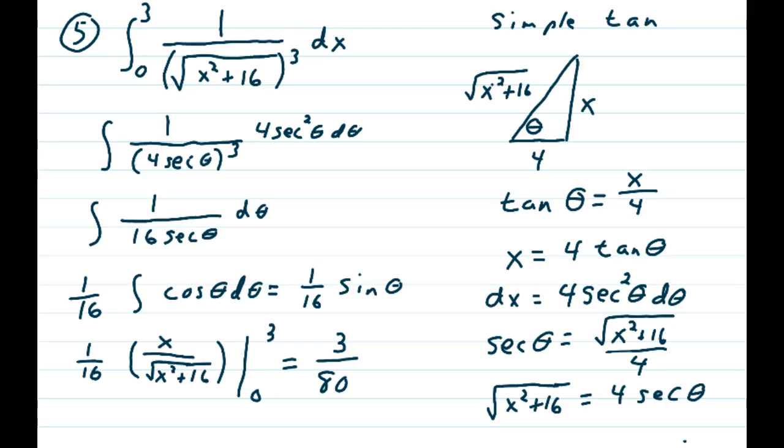Now it's time to change our algebraic problem, which was unsolvable, into a trigonometric problem. So 1 is 1, and we take √(x²+16) and change it into 4 sec θ. That, of course, is being cubed. And we change dx into 4 sec² θ dθ.